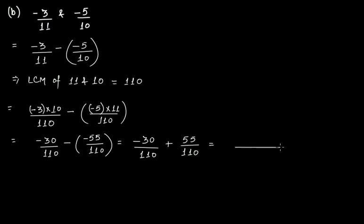So now we have two like rational numbers. So simply put 110 here and this is minus 30 plus 55, you get minus 25 over 110. Now clearly it can be further simplified if we divide this 25 and this 110 by 5. If you want you can simplify it, but I'll leave that for you.